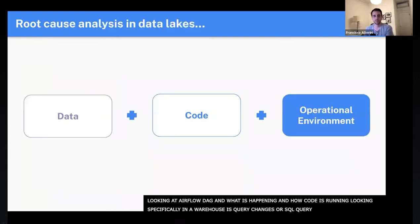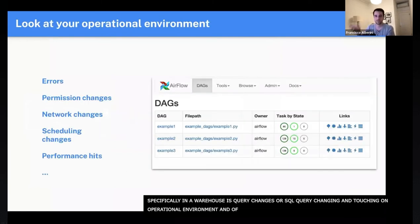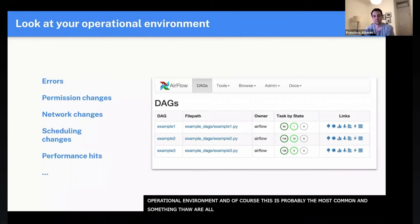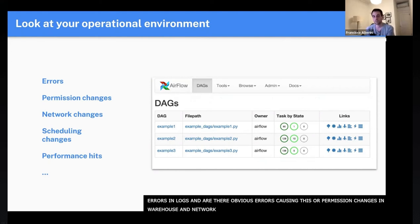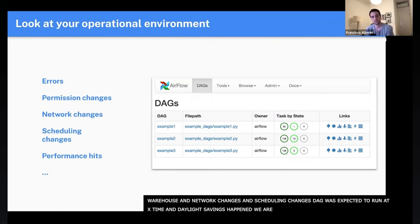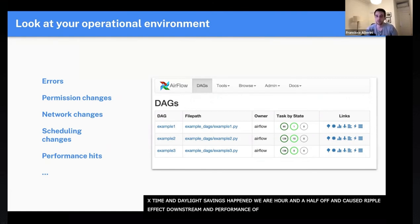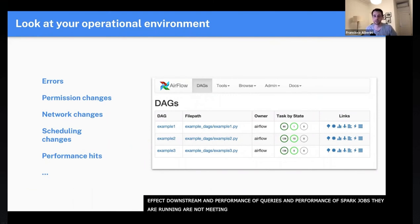Lastly, the operational environment — probably the most common and something Airflow users are very familiar with. Are there any errors in the logs? Are there obvious errors potentially causing this issue? Perhaps permission changes within the warehouse, network changes, scheduling changes — maybe a particular DAG was expected to run at a certain time, but daylight savings happened and now you're an hour off, causing a ripple effect downstream. And then performance hits — maybe the performance of the queries or the Spark jobs running are not meeting expectations, and that's what's causing the downstream ripple effect.